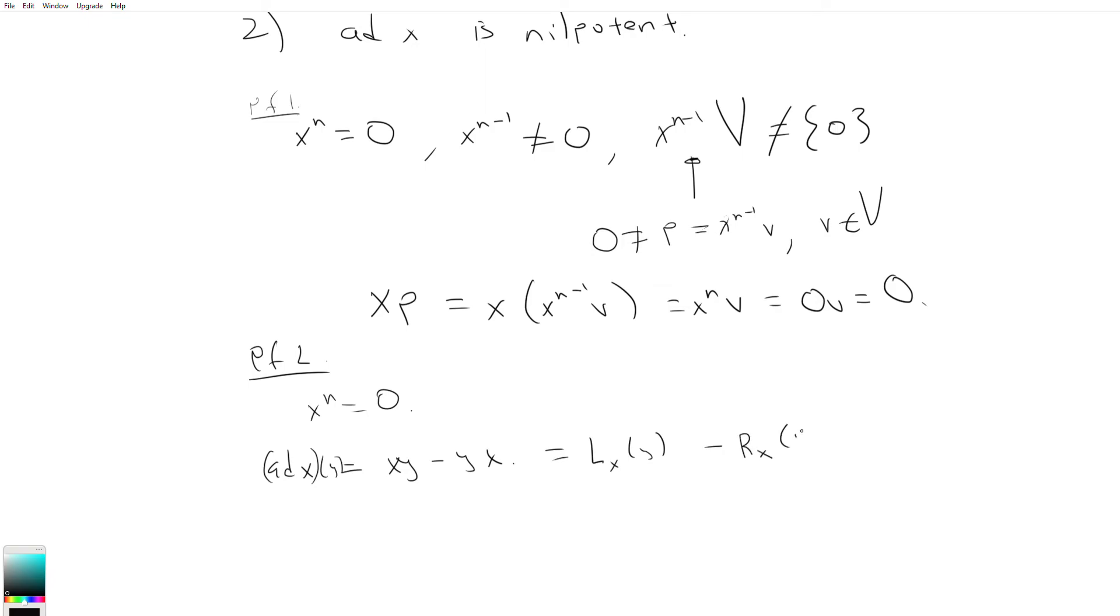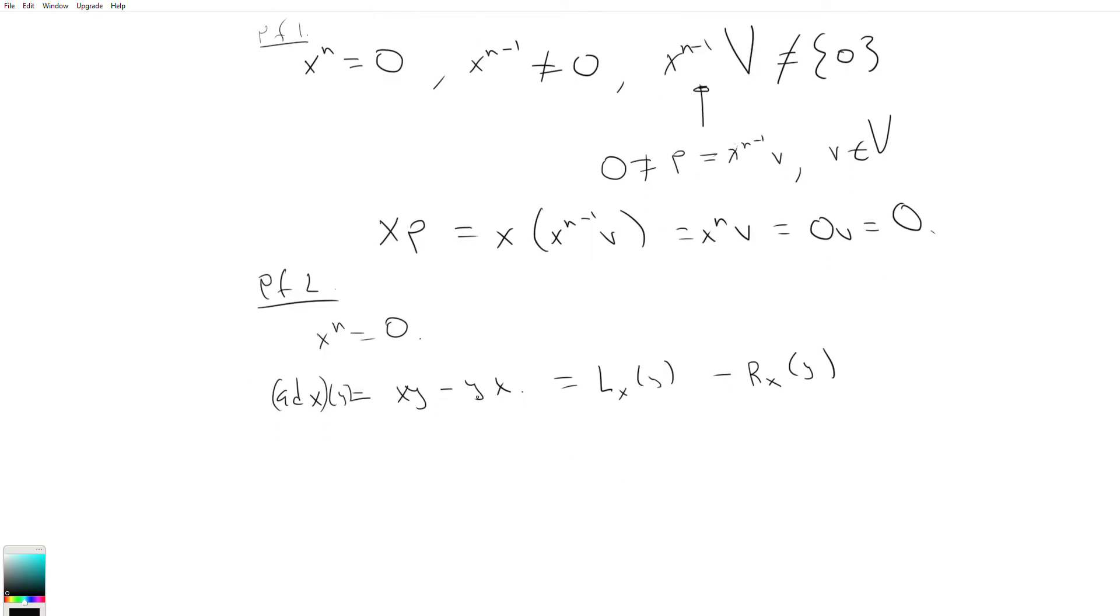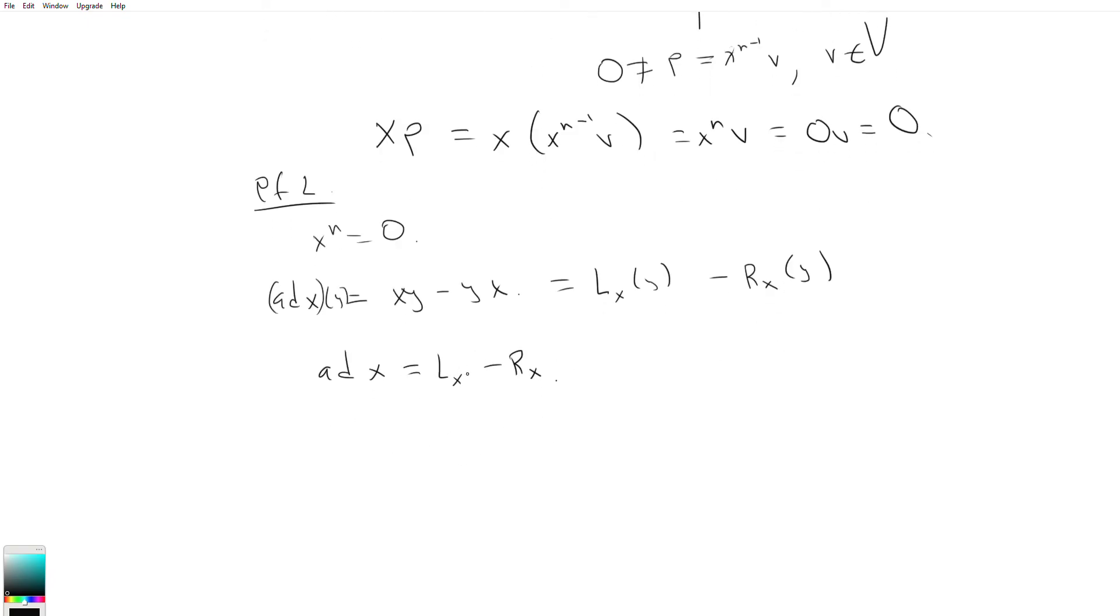So this can be thought of as left multiplication by x acting on y minus right multiplication by x acting on y. So I'm using L_x to denote left multiplication by x and R_x similarly. So we can say ad x is actually equal to L_x minus R_x. And so observe that L_x and R_x are actually commutative. They commute with each other. This is because of associativity. It doesn't matter if I left multiply by x and then right multiply by x, or if I right multiply by x and then left multiply by x. It's perfectly fine.